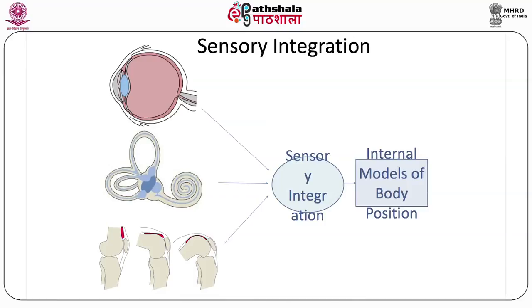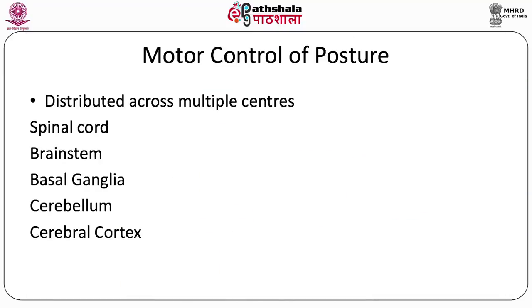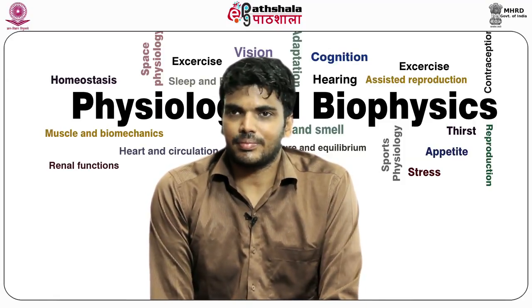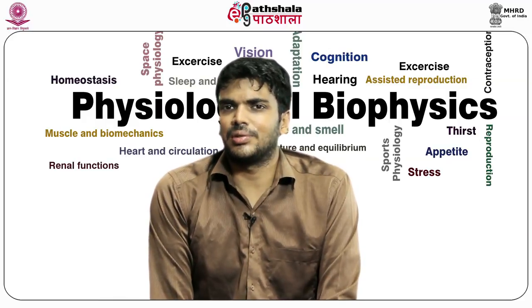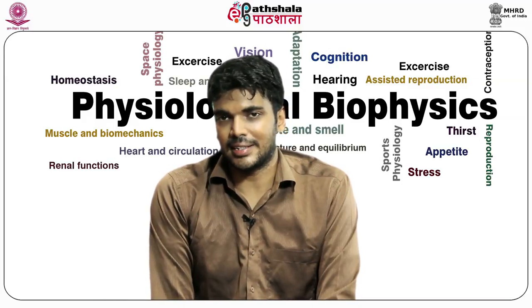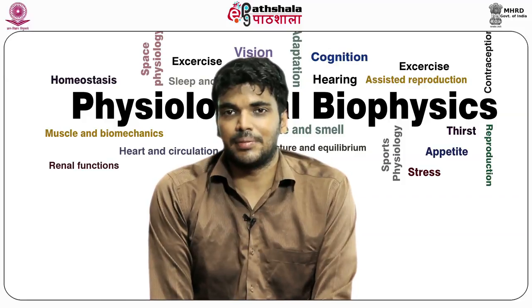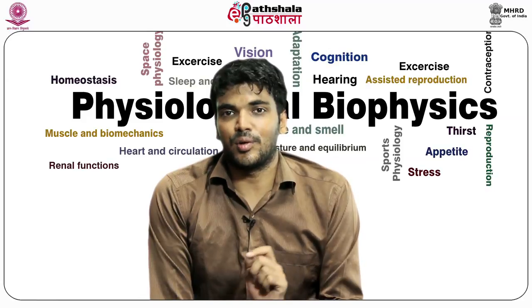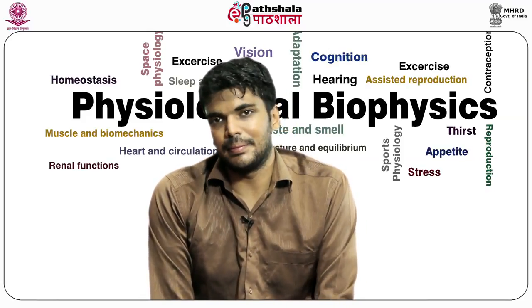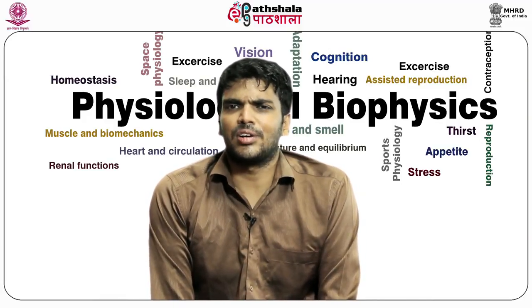Motor control of posture is distributed hierarchically across multiple centers: the spinal cord, brainstem, basal ganglia, cerebellum, and cerebral cortex. Motor planning involves recruitment of all these areas. Individual contributions of each center have been studied through neural lesioning studies — including transection at spinal cord and brainstem levels, and focal lesions targeting the basal ganglia, cerebellum, and various cerebral motor cortices.